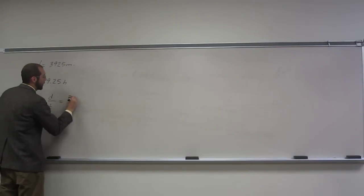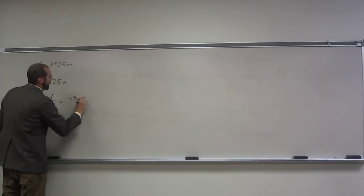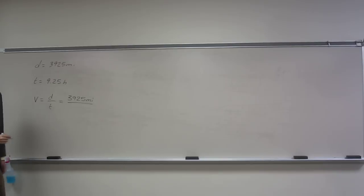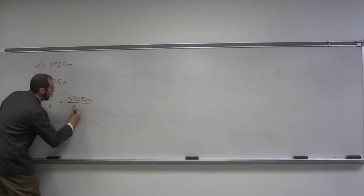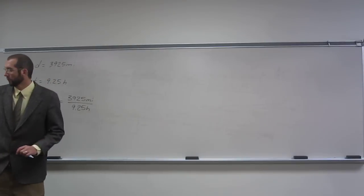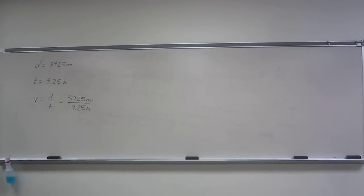So distance in this case, 3,925 and it doesn't specify what units it wants it in. So we'll just keep it in miles per hour. That's cool with me. And then just divide it.